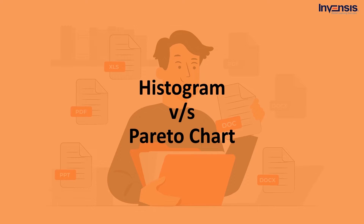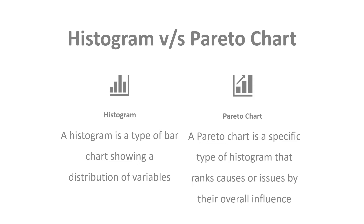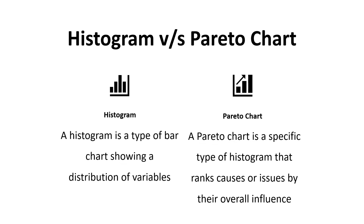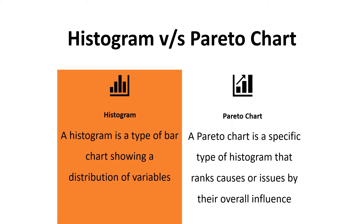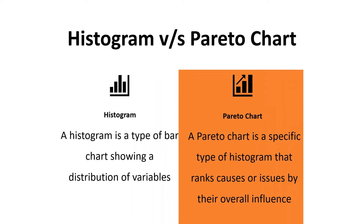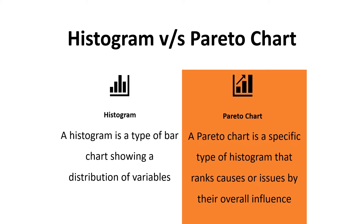Now we will understand the difference between Histogram and Pareto Chart. A variety of charts are used to evaluate and analyze quality results inside a project. The Histogram and Pareto Charts are similar and sometimes mistaken for each other. A Histogram is a type of bar chart that depicts a variable distribution, where each property is represented as a column and the frequency of occurrence is shown as the height of the column. A Pareto Chart is a form of the Histogram that classifies causes or concerns based on their total effect, and aids in prioritizing remedial measures by displaying issues with the greatest impact in order. The Pareto Chart also contains an arc representing the cause's cumulative percentage.